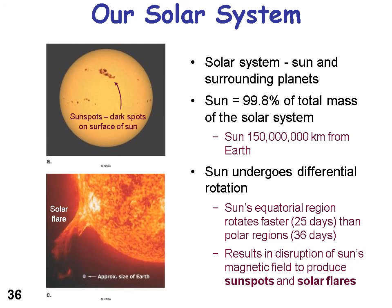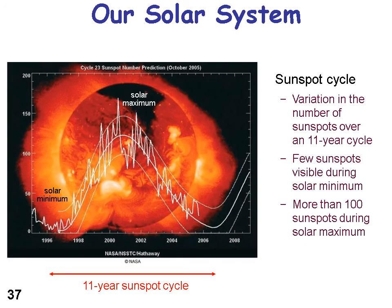The sunspot cycle varies over time. This diagram shows from about 1992 through 2010. In the early 2000s — around 2001 — there was a solar maximum with lots of sunspots. The variation follows roughly 11-year cycles, with few sunspots during solar minimum and a maximum of about 100 sunspots during solar maximum.